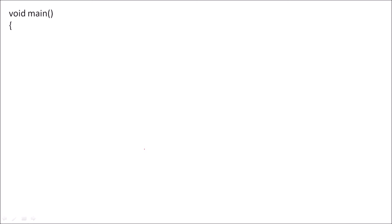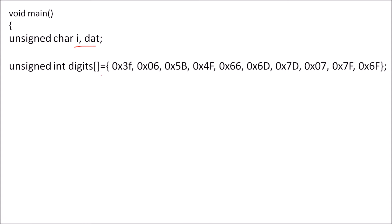Then the main program — the main function is declared here. Two variables are declared as unsigned character, that means 8-bit character. And here an array is declared. The name of the array given is 'digits', declared as unsigned integer or you can declare it as unsigned character also. In this array, the 7-segment codes for common cathode display are stored.